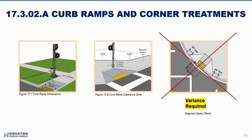The standard also calls for pedestrian push buttons right next to level landings wherever possible. Many design criteria won't be met every time, and the chapter provides specifications for when treatments are feasible and under what project scopes — smaller scope projects are not expected to make lots of changes, but larger scale projects should meet these standards. A variance is only needed where a diagonal ramp is the only way to move forward.